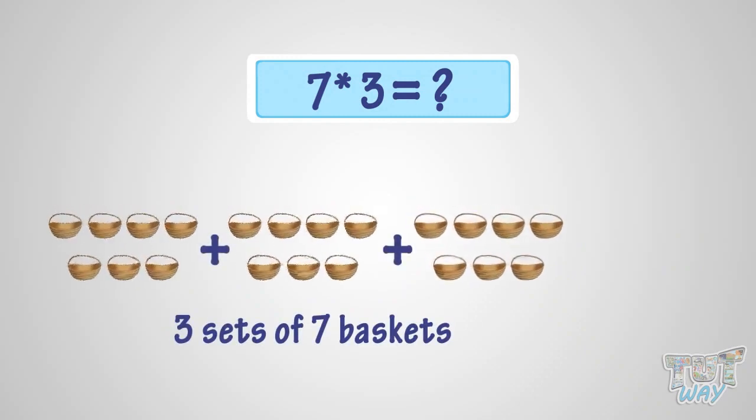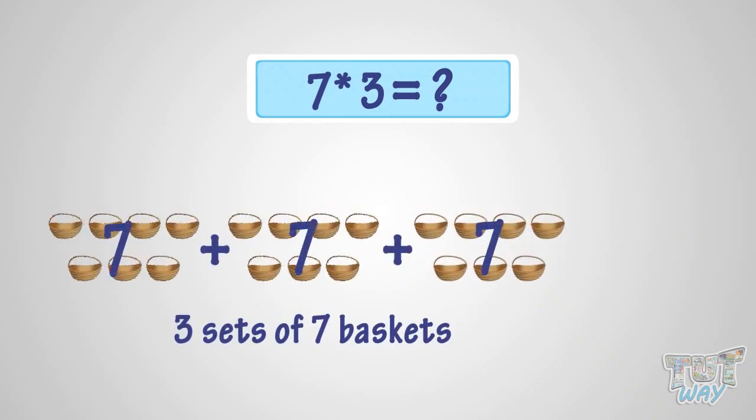What is 7 multiplied with 3? It is the same as three sets of 7 baskets. So, it is 21 baskets. That is, 7 multiplied by 3 is 21.